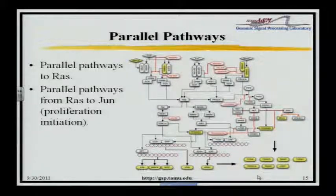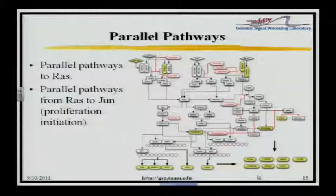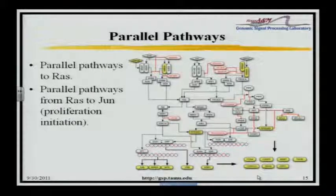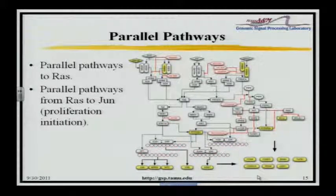Here's the parallel pathways slide. There's RAS sitting in the middle of it. You want to get down to proliferation and survival signals — you can come in this way or that way. This is a small diagram, just an example of all the ways in which you can approach the system to reach these signals. Many parallel pathways — and this is typical of what you're going to see in these kinds of diagrams.